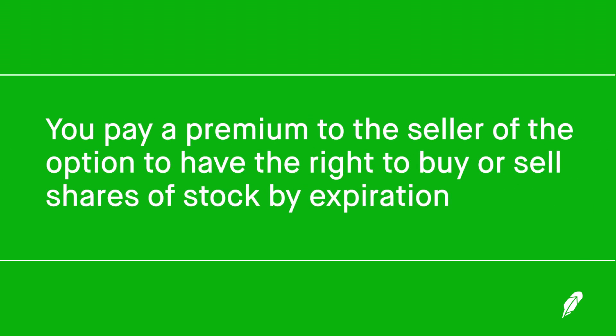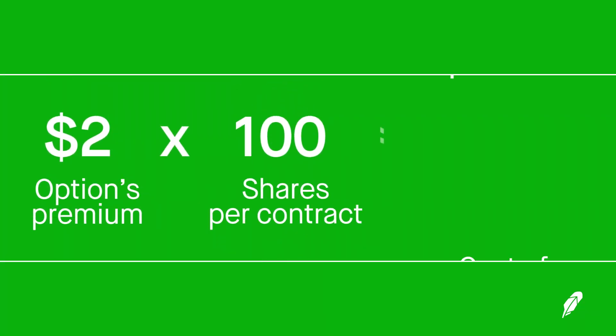In simple terms, an options premium is the price tag of the option. If you've ever paid for car insurance, you've likely heard the term premium. Just as you pay your insurance company to insure your car for a certain period of time, you pay a premium to the seller of the option to have the right to buy or sell shares of stock by expiration. The premium is how much you pay per share. Since an options contract is typically for 100 shares, you multiply the premium by 100 to get the real dollar cost. For example, if an option had a premium of $2, the cost would be $200.